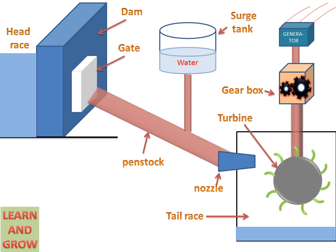When this gate will be open, water particles will start flowing through the penstock and from the nozzle they will strike to the turbine. And after striking on the turbine blades, turbine will start rotating.